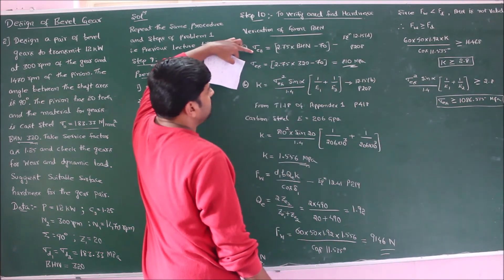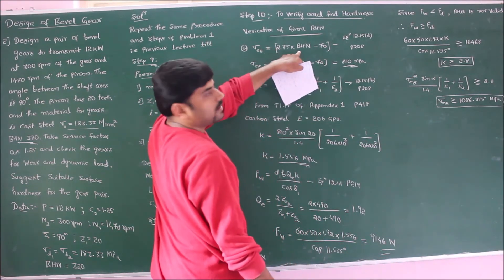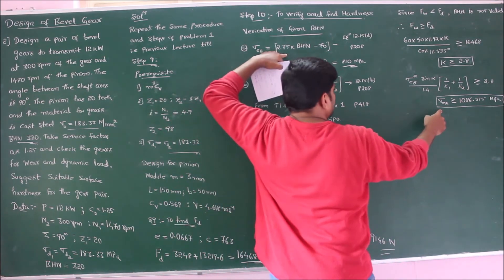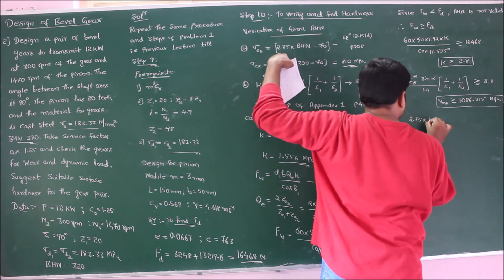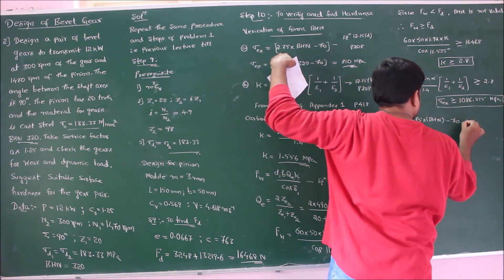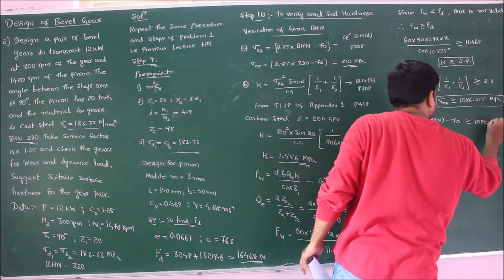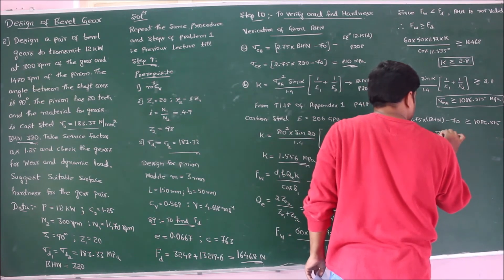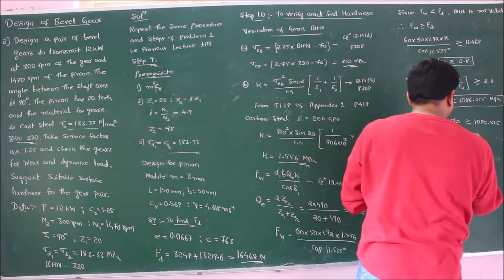Using the endurance stress equation (equation 12.15D): 2.75 × BHN − 70 ≥ 1086.515. Solving this inequality gives BHN ≥ 420.